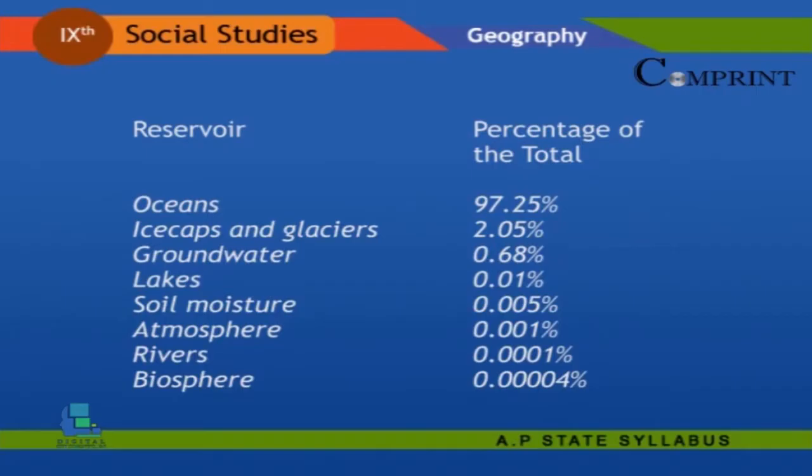29.9 percent of fresh water exists as fresh groundwater. Only 0.26 percent of the total amount of fresh water on Earth is concentrated in lakes, reservoirs, and river systems, where it is most easily accessible for our economic needs and vital for aquatic ecosystems.